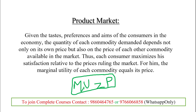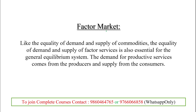MU equals P indicates product market equilibrium under general equilibrium. Marginal utility is the additional satisfaction a consumer gets from purchasing each additional unit of a commodity. The factor market is the market where producers are the buyers — they use factors to make other products. General equilibrium in the factor market requires demand for factors to equal supply of factors. The demand for productive services comes from producers, while the supply comes from consumers.